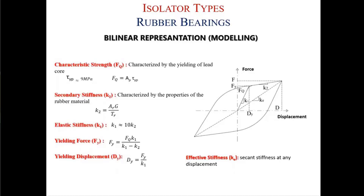How do we model rubber bearings? This illustration shows a bilinear representation of rubber bearings — mostly lead rubber bearings. There is a first initial stiffness branch (elastic stiffness), which you only see in the first loading phase. After that, the isolator moves along the secondary stiffness branch. When we design rubber bearings in software, we mostly use this bilinear representation. If we know all components of this representation, we can model lead rubber bearings easily.